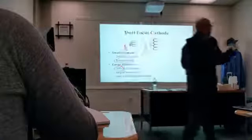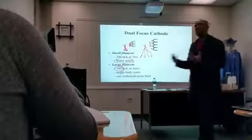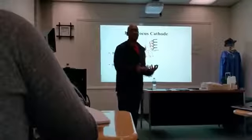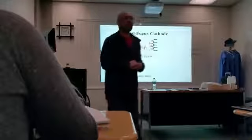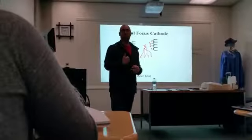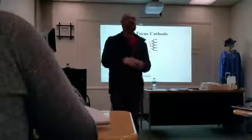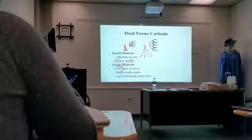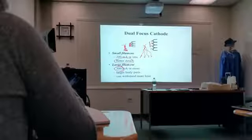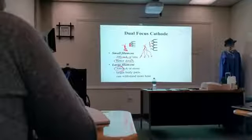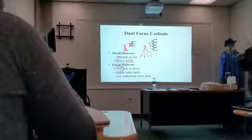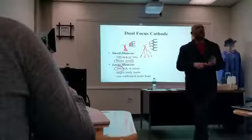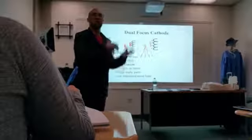What does it mean to have MA and KV? Those are the factors we control to create our x-rays. MA is quantity — the number of x-rays and electrons. KV is the force behind those electrons, driving them from A to B. I do a lot of analogies in my lectures because comparing science to familiar things helps you grasp it.